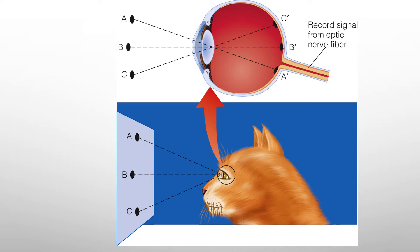How did we find out about these receptive fields? A lot of this research in vision was done on cats. They have pretty similar visual systems to humans, and so there's been a lot of research on cats. What they would do is look at the retinal ganglion cells — their axons make up the optic nerve — and record the signal from a single optic nerve fiber to see what is this neuron's receptive field.